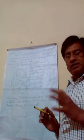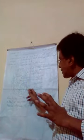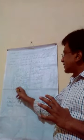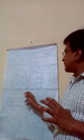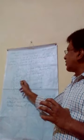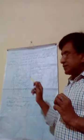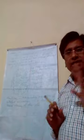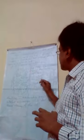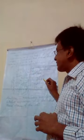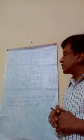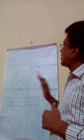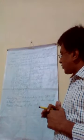In the matrix, ribosomes are present and scattered throughout. This matrix also contains genetic material. That genetic material is called DNA. So this is the structure of mitochondria.